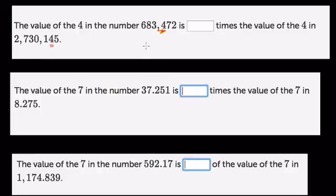Here it's in the hundreds place. In other words, it moved once to the left. If you think about the way this is structured, we have 2,730,145, and here we have 683,472. So our 4 is here, and it moves once to the left. It's 10 times larger.